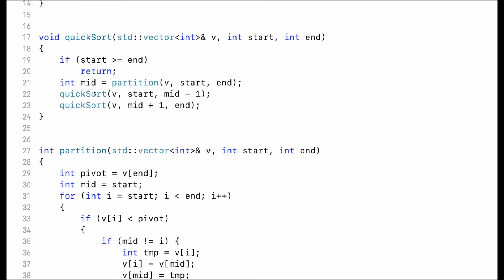This is returned, and then the two function calls occur that I mentioned earlier. Note that these are called with mid minus 1 and mid plus 1, so the pivot element is ignored when performing these two function calls.